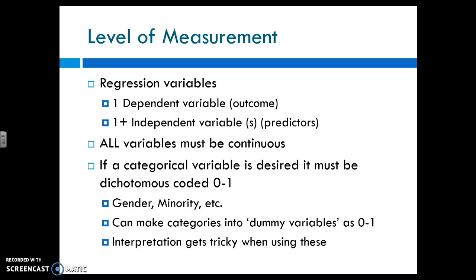The level of measurement for regression is very, very, very important. Everything is continuous. Period. It has to be. So if you are using a categorical variable, we need to do a thing called dummy coding. Essentially it makes that variable zero and one. The whole point of this is because we are using means. So we're using the average of all of these variables. We can't take an average of minority. We can't take an average of gender. That doesn't necessarily make any sense.